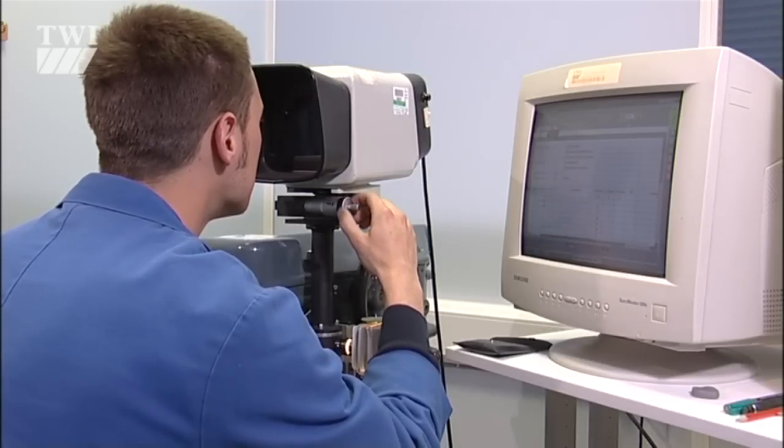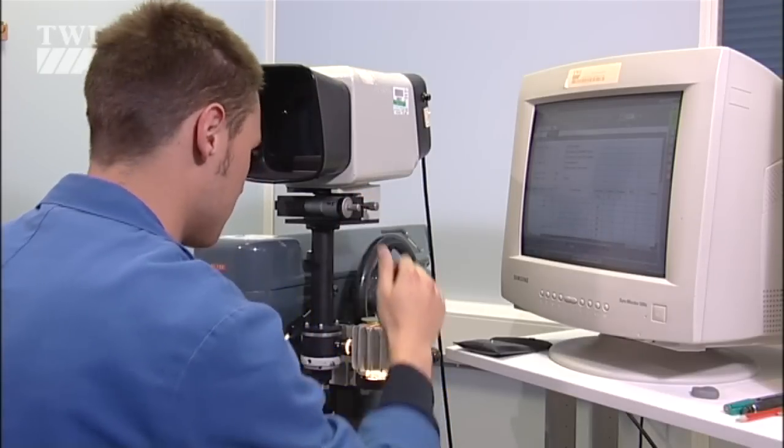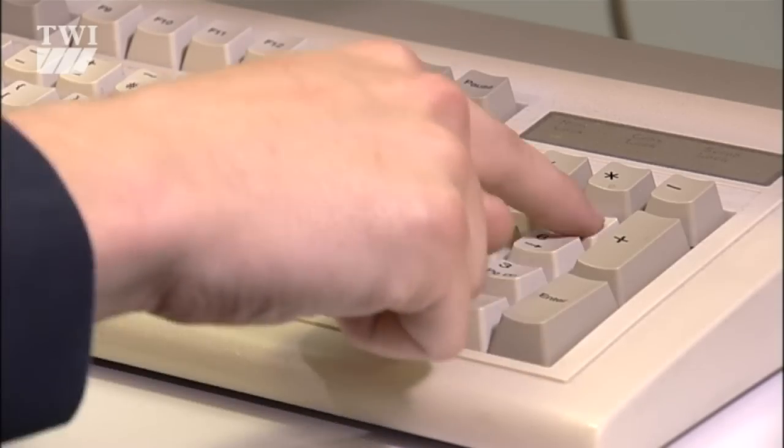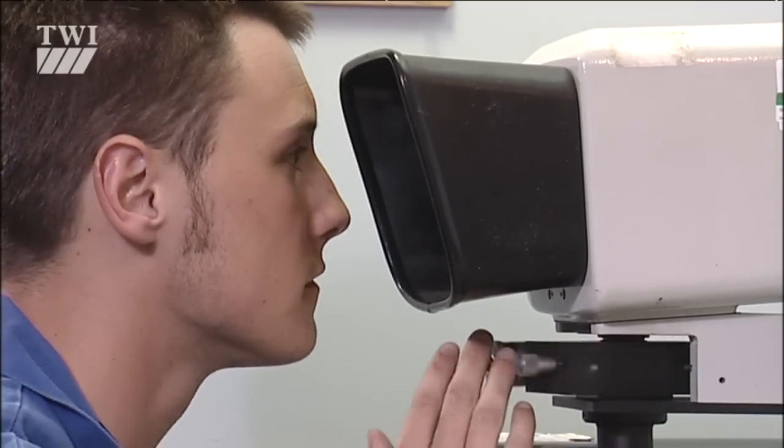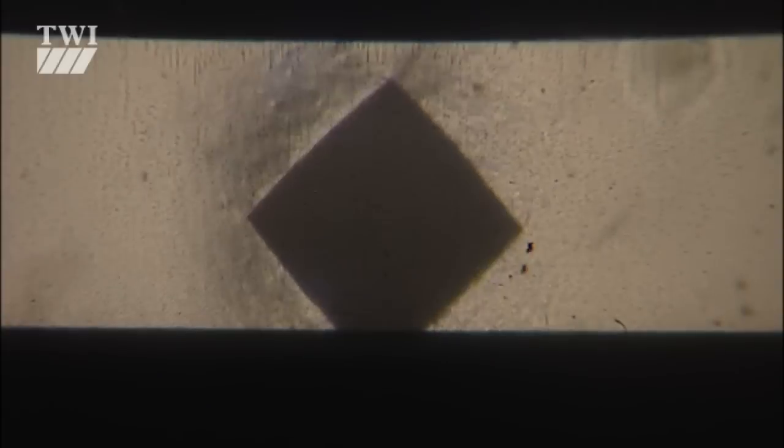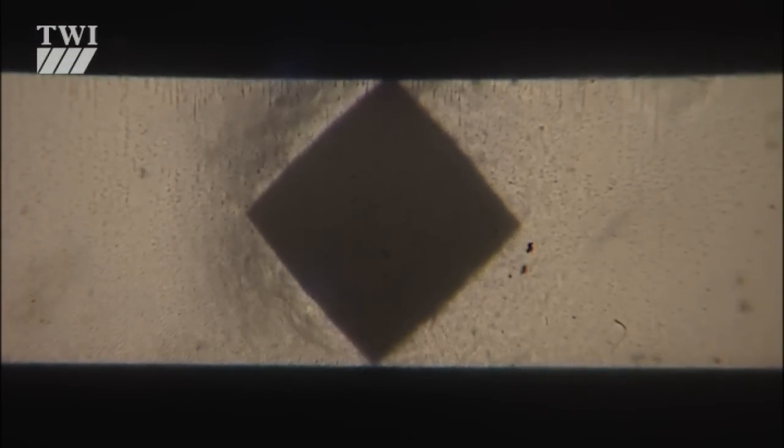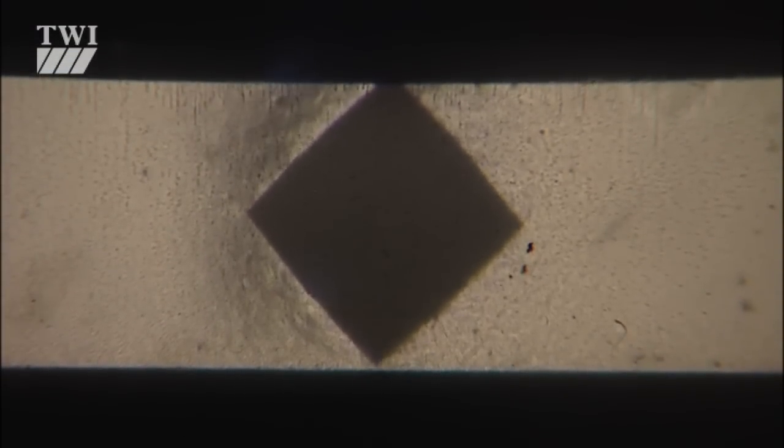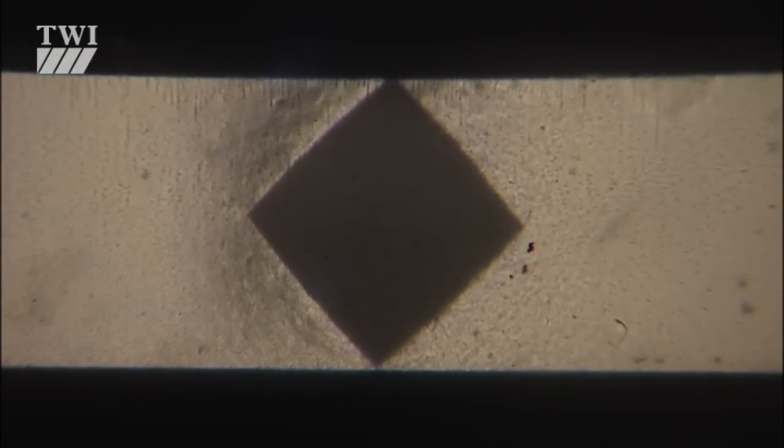By lowering the indenter under a standard load for 30 seconds onto the surface of the sample, it's possible to calculate the hardness by measuring the impression it leaves. Needless to say, the indenter dimensions and the loads applied are standardised in the codes.